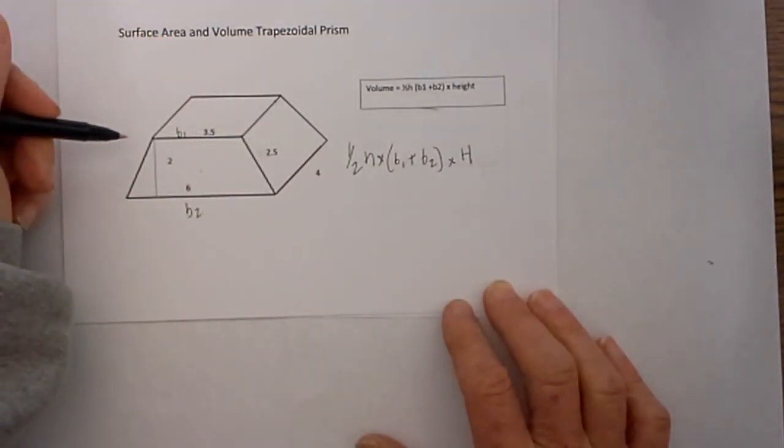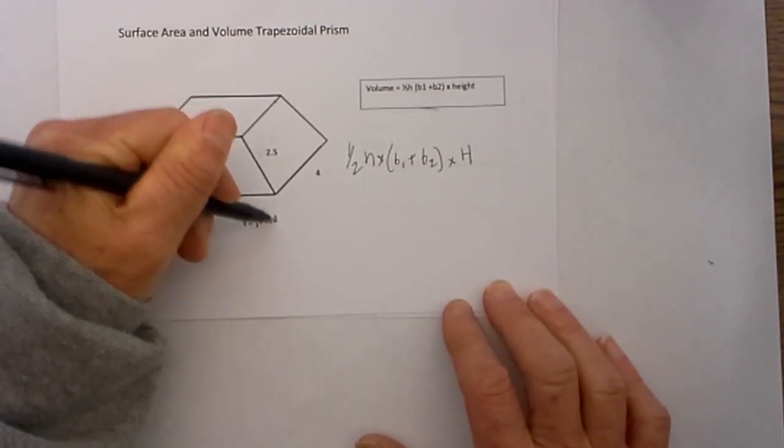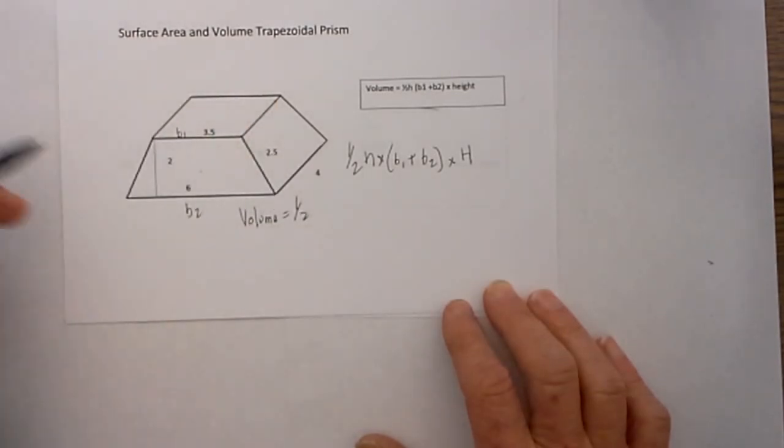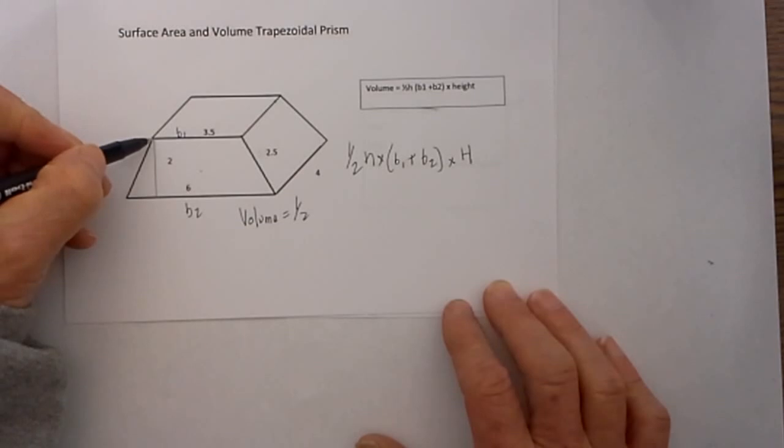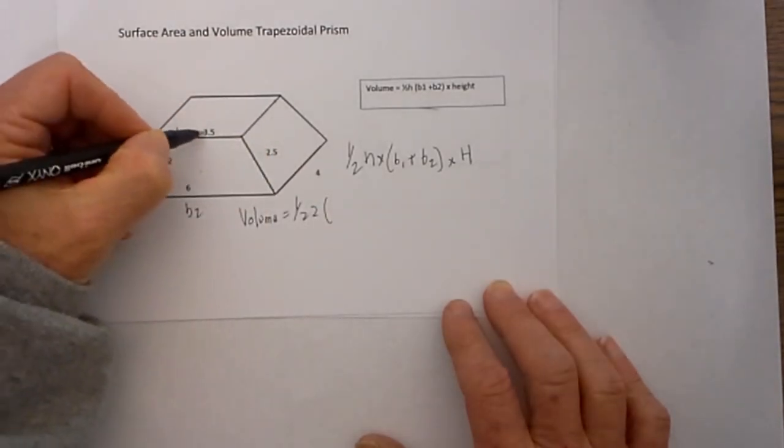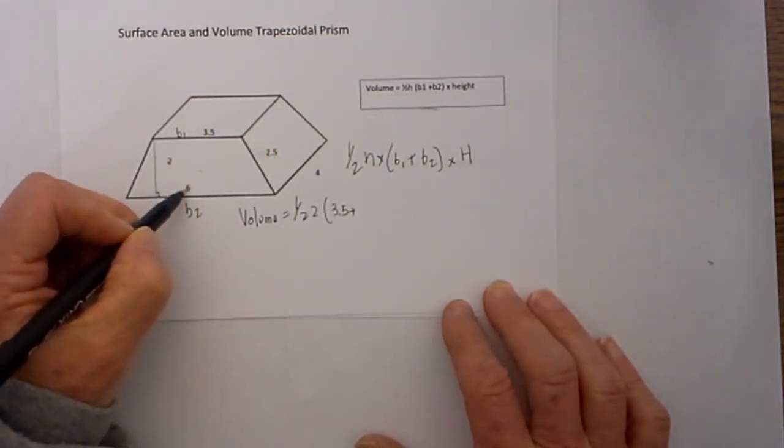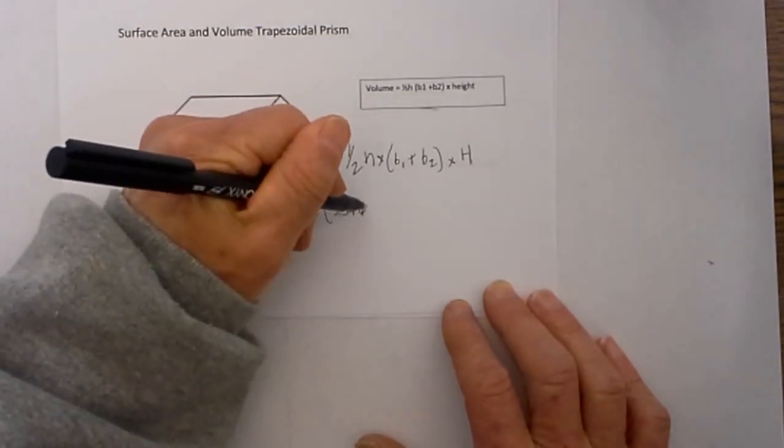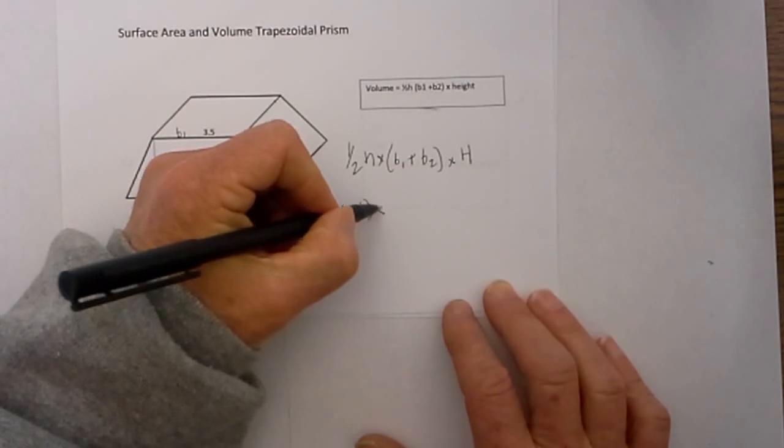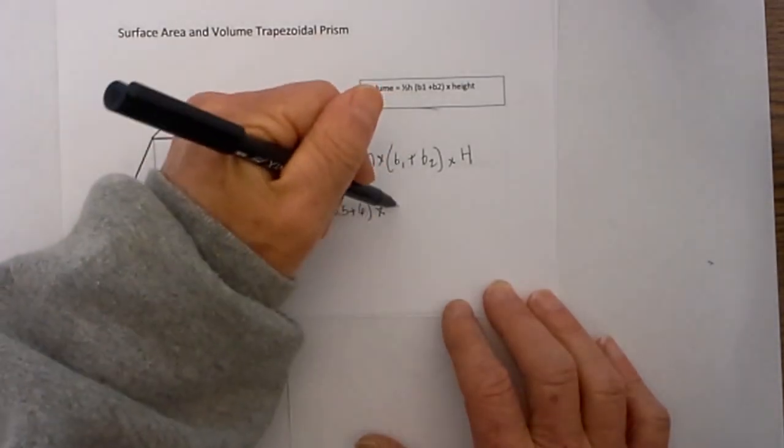Now all we need to do is start plugging in numbers. We have volume equals 1 half the height of the trapezoid, and remember the height is a perpendicular line to the two bases. This would be a 90 degree and it is given that is 2 times base 1 which is 3.5 plus the second base which is 6, and then it is going to be times the height and that is given as 4.